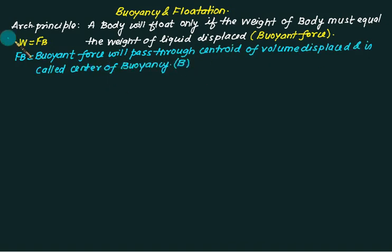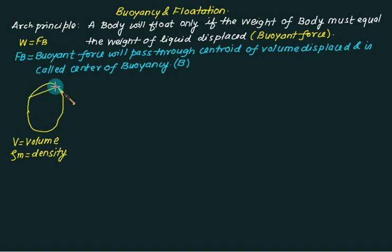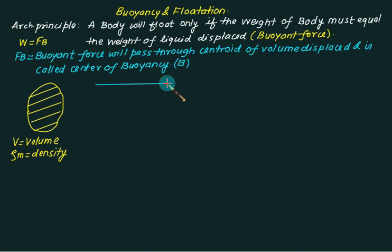The center of buoyancy is normally represented by the letter B. Consider a body where V is the total volume of the body and ρm is the mass density of the body material. We have two cases of flotation: one is called a fully submerged body and the other is called a partially submerged body.